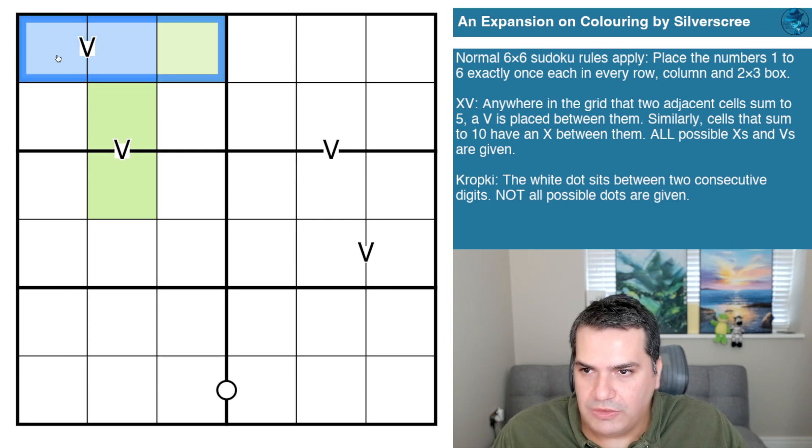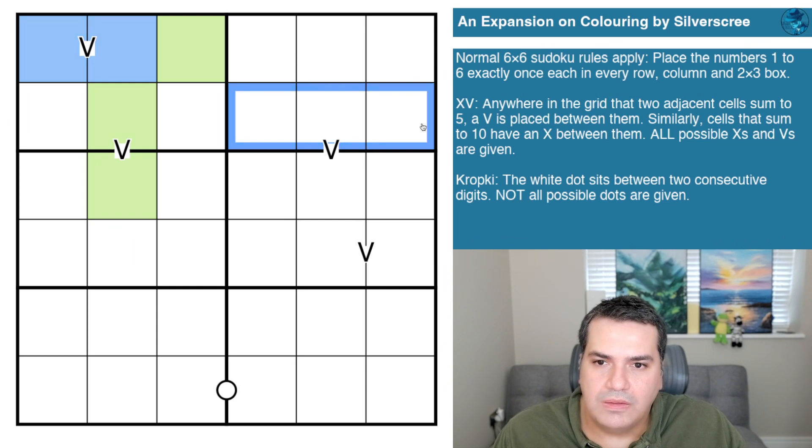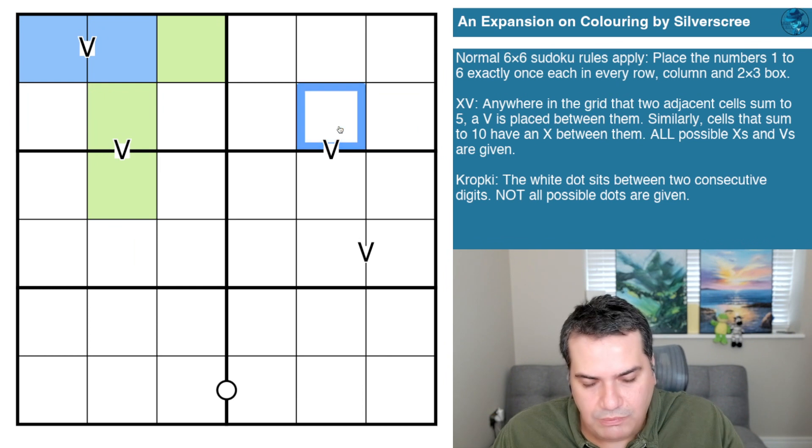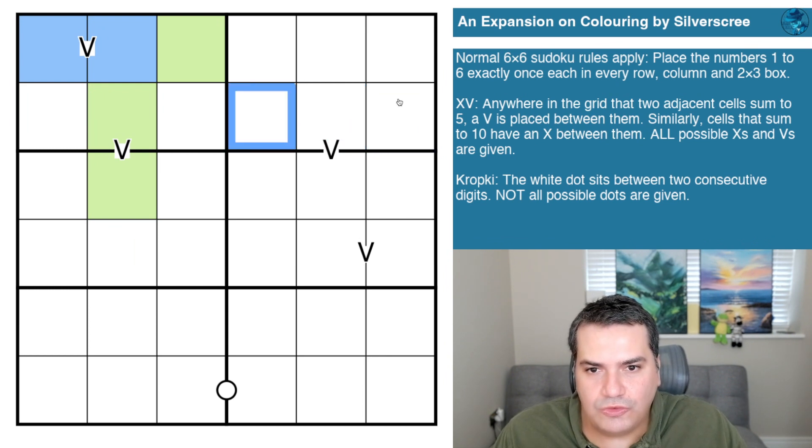Neither of these are green, so this cell here can't be there otherwise it'll be a V, can't be there otherwise it'll be a V. This cell can only be in here, which also means these two blues and one green must be down here. If I put a blue in the center, I would have to put a blue adjacent to it in one of these two locations, but there is no V between them and negative constraints apply.